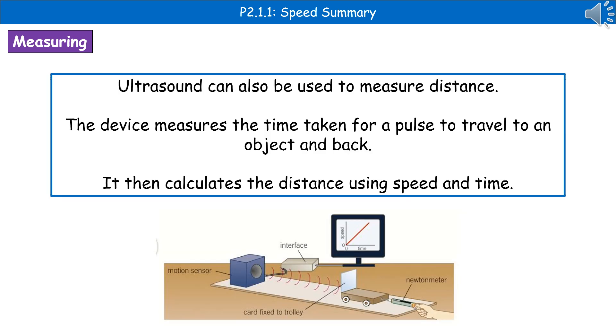A slightly more high-tech way to measure distance is through using ultrasound. In the diagram below, you can see we've got a sensor on one side and a card fixed to our trolley on the other. The ultrasound device sends a pulse out and records the time it takes for the pulse to travel to the object and back. It can then use the speed at which ultrasound travels along with time to calculate the distance.